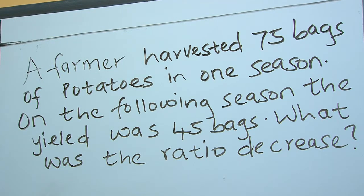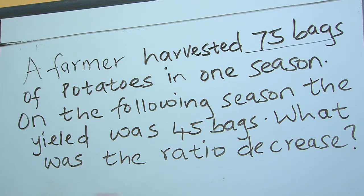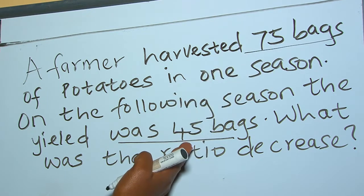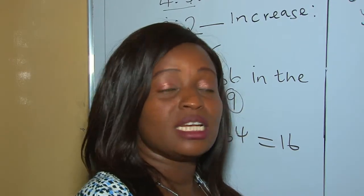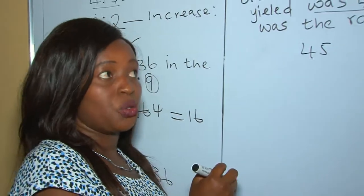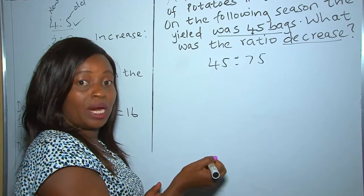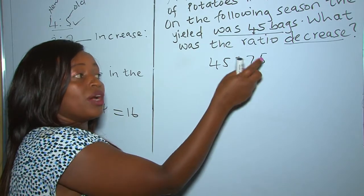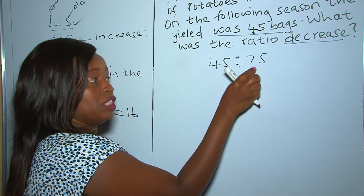In our third example, a farmer harvested 75 bags of potatoes in one season. The following season there were 45 bags. What was the ratio decrease? Initially there were 75 bags and they became 45 — there is a clear drop, so this is a ratio decrease. Our current value 45 takes the first position in the ratio and 75 as the original takes the second position. That is why with ratio decrease we begin with the smaller number going to the bigger number.